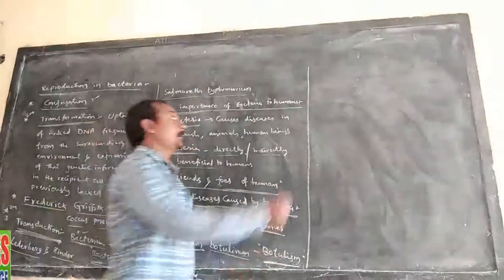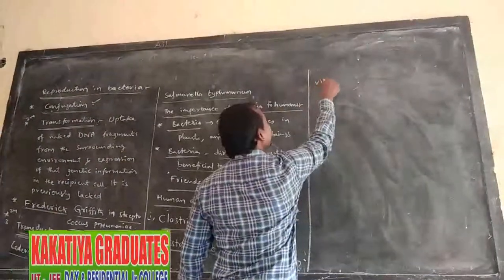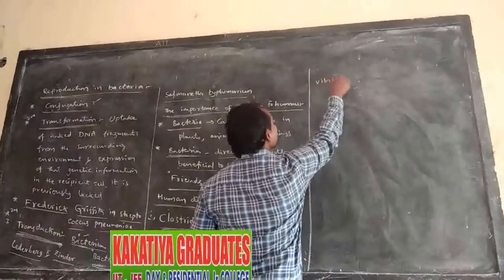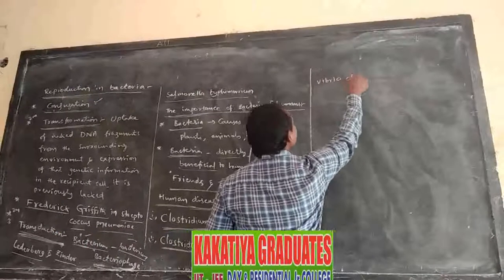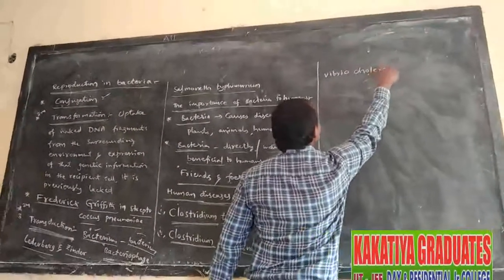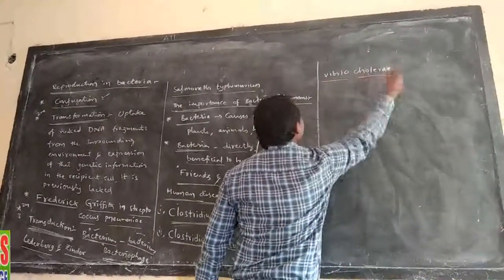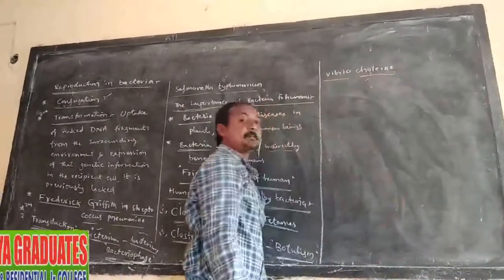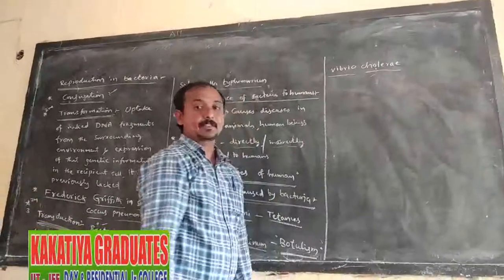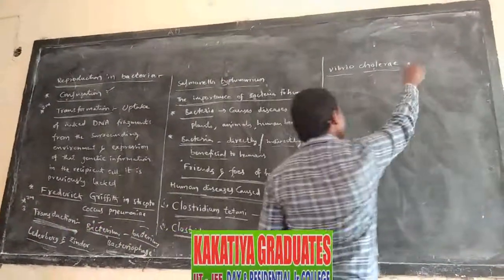Third one: Vibrio cholerae. Vibrio cholerae is a bacteria. It causes cholera disease.